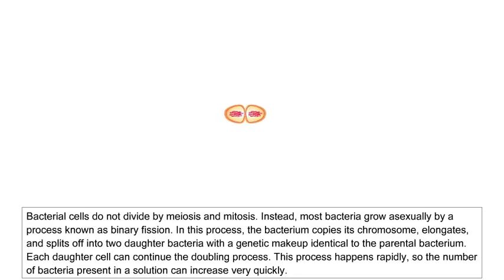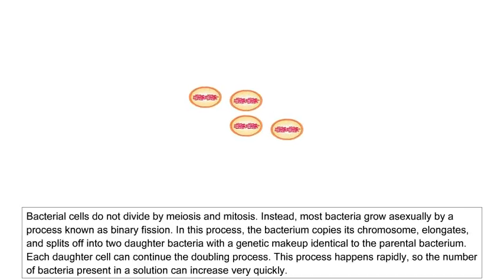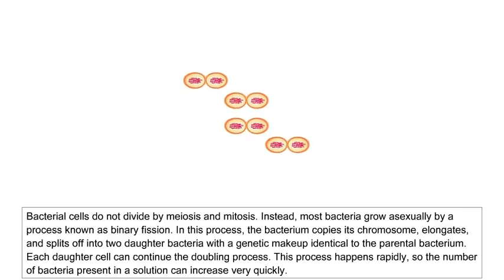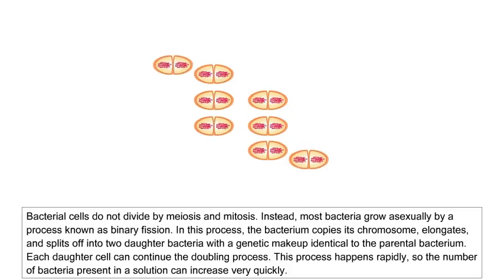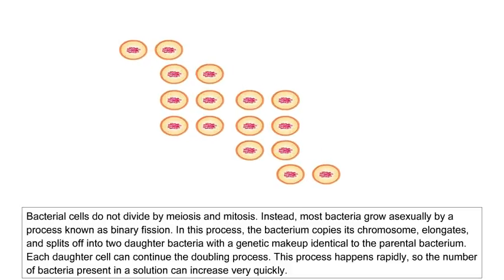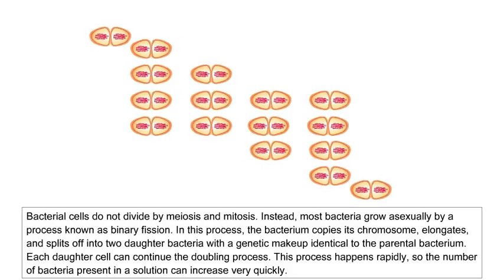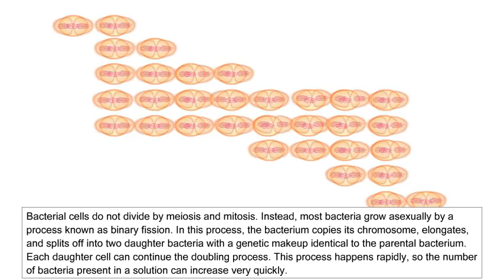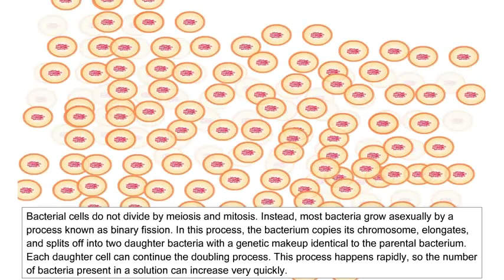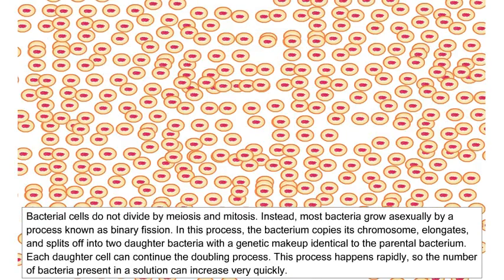Bacterial cells do not divide by meiosis and mitosis. Instead, most bacteria grow asexually by a process known as binary fission. In this process, the bacterium copies its chromosome, elongates, and splits off into two daughter bacteria with a genetic makeup identical to the parental bacterium. Each daughter cell can continue the doubling process. This process happens rapidly, so the number of bacteria present in a solution can increase very quickly.